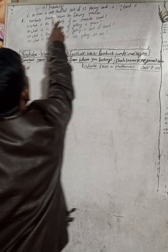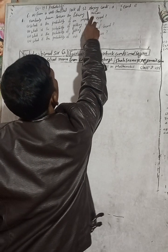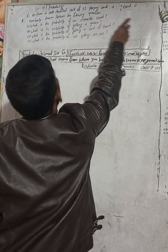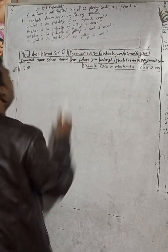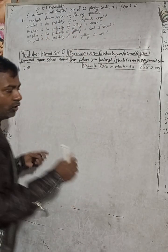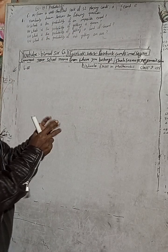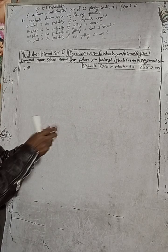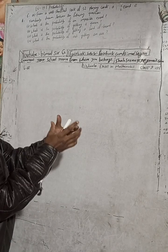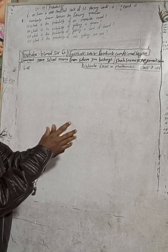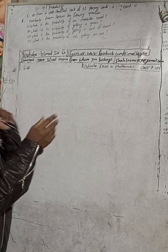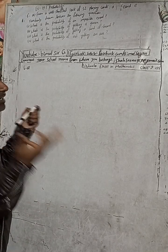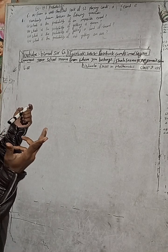The question is: from a well-shuffled pack of 52 playing cards, a card is randomly drawn. Answer the following questions. A well-shuffled pack of 52 cards means there are 52 cards total.